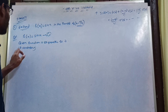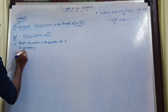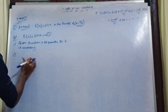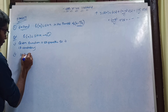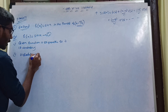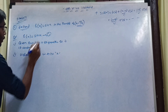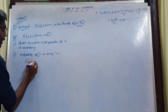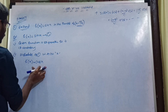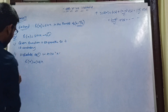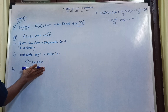First, continuous. Second, derivable — differentiable. So we differentiate equation 1 with respect to x. The differentiation of sin(x) is cos(x). Sin's differentiation is cos. These two conditions are satisfied: the function is continuous and differentiable.